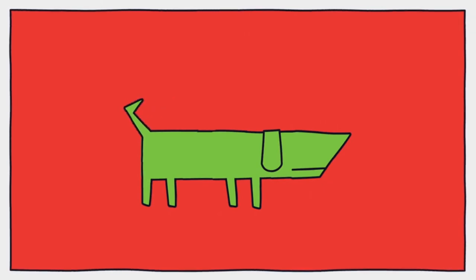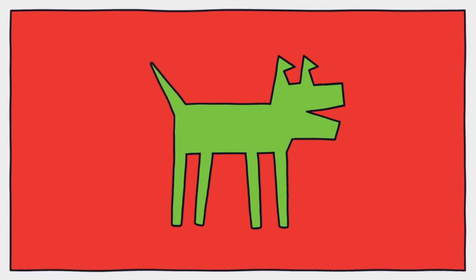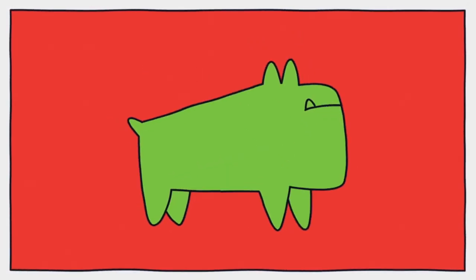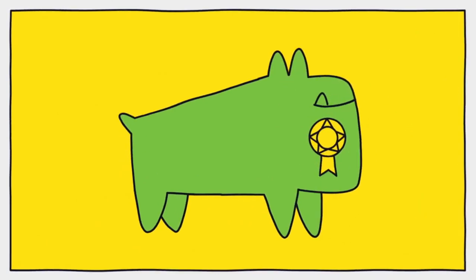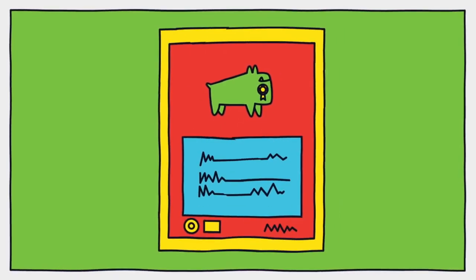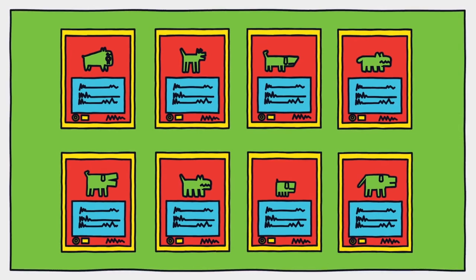Short, stocky dogs to herd livestock by nipping their heels. Elongated dogs to flush badgers and foxes out of burrows. Thin and sleek dogs for racing, and large, muscular dogs for guard duty. With the emergence of kennel clubs and dog shows during England's Victorian era, these dog types were standardized into breeds.